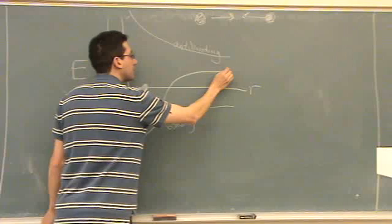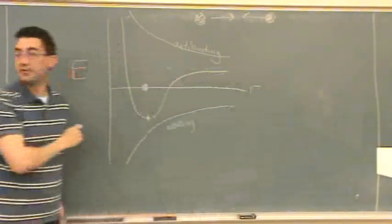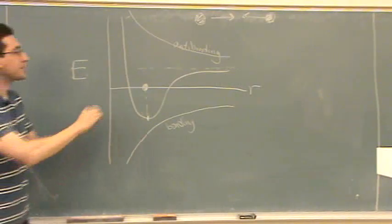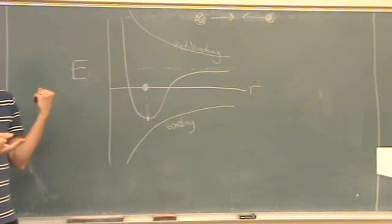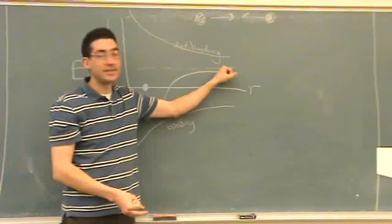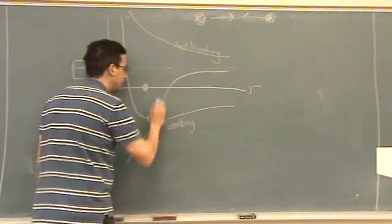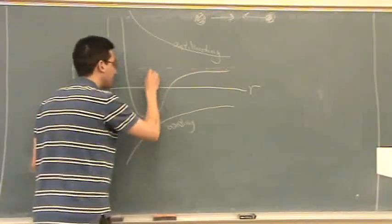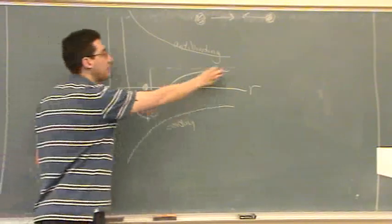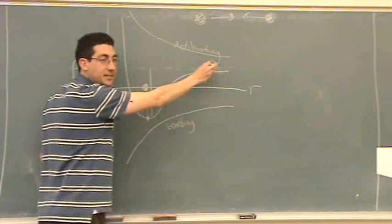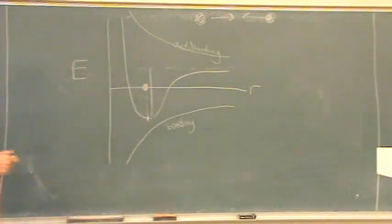Now notice, this reaches some asymptote right here as it goes out further and further to infinity. Basically, as they get further and further away, they act as if neither of them exist. So it reaches this limit. So this distance from here down, that distance is the bond energy. The energy difference between not existing and the lowest energy state. So this is the energy it contains within the bond.